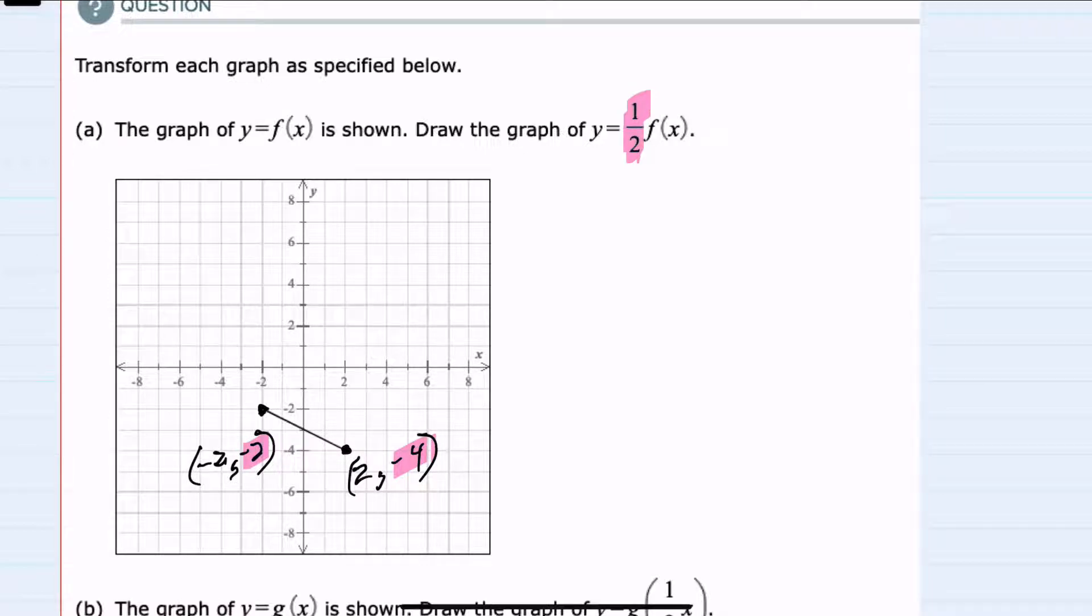So starting with this point on the left, when I input negative 2, instead of getting the output of negative 2 I'm going to get half of that. And half of negative 2 is negative 1, so I'll have the point negative 2, negative 1.